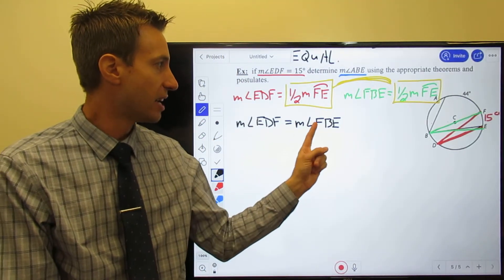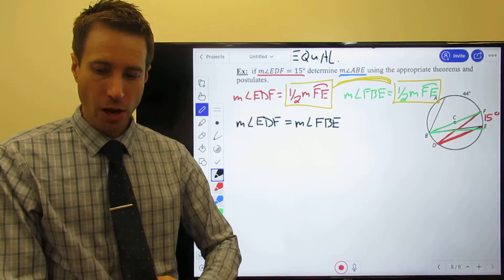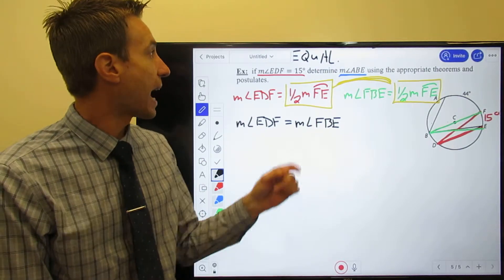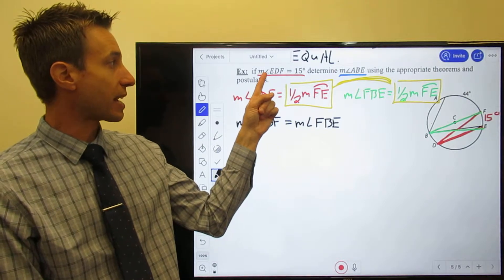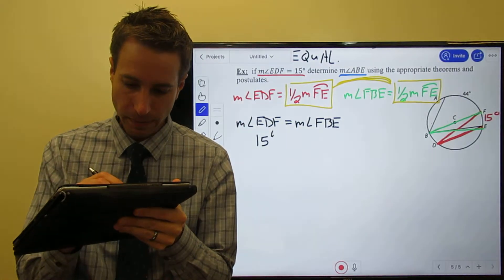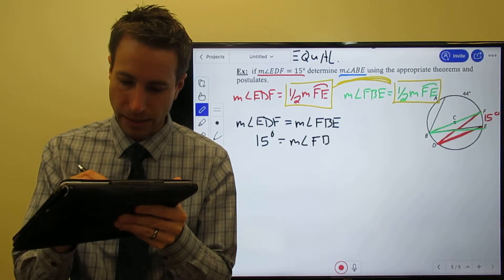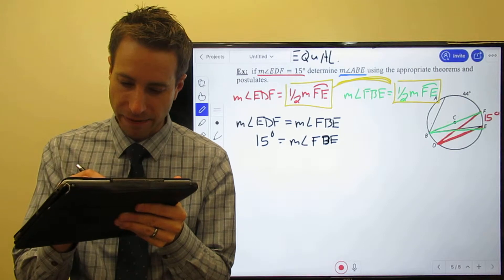Okay, so here we go. Let's go ahead and find - actually, I do know the measure. Look, the measure of the angle is 15. So because this is 15, that's equal to the measure of angle FBE. Okay, fantastic.